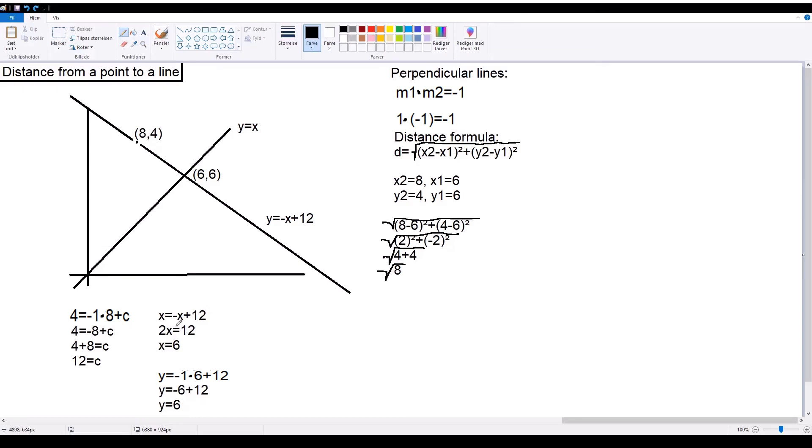Then we just have to isolate x to one side. So, here we just isolate x over to the other side. So, we get 2x equals 12, and then we simplify into x equals 6. Now, to find out what the y here is, we simply can substitute the x in this formula for 6, and then we end up with this equation. So, y equals negative 1 times 6 plus 12. y equals negative 6 plus 12. Basically, y equals 6.